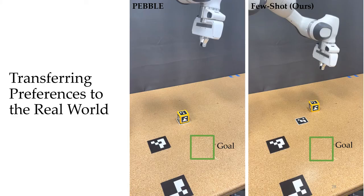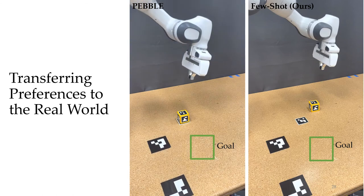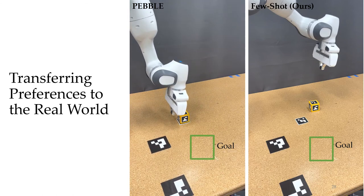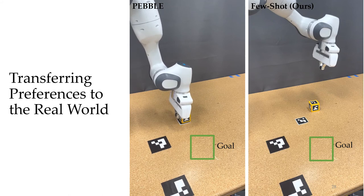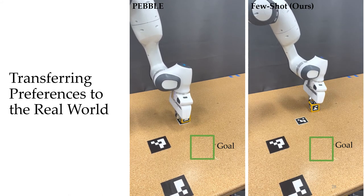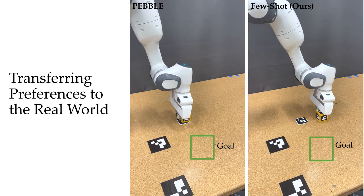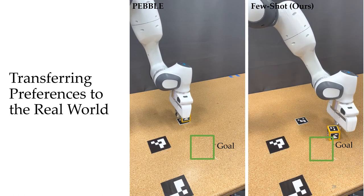Our method also works in the real world. Here's a Franka Panda arm trying to push a block to a goal location. Again, Pebble fails to make any progress, but when we look at our approach, it's able to push the block into the target goal location because it has been pre-trained on a lot of data and doesn't need that many preferences.